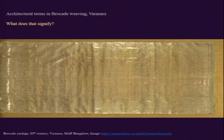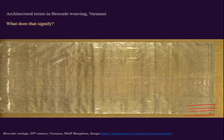In brocade weaving, particularly for Varanasi brocade, there are certain architectural terms used. If we pay close attention to the image on screen, we can see horizontal and vertical lines crisscrossing — parallel horizontal lines running across the entire fabric and vertical grids dividing the space into a grid-like, graph-paper-like form.